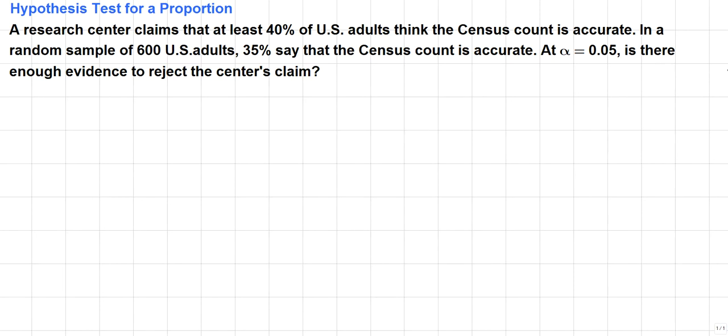This is a hypothesis test for a proportion. The first thing we need to do is verify that the sampling distribution for p-hat can be approximated by a normal distribution. We want to determine if n times p is greater than or equal to 5 and n times q is greater than or equal to 5.